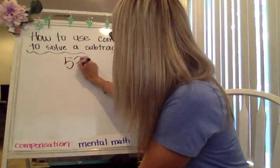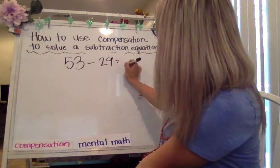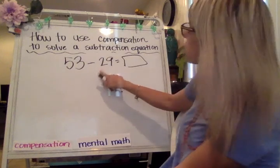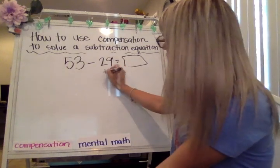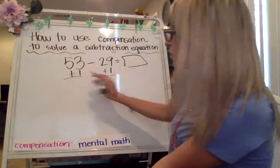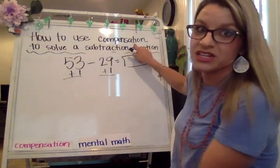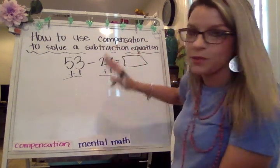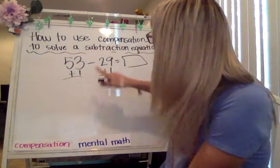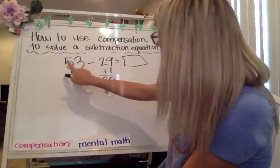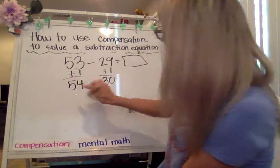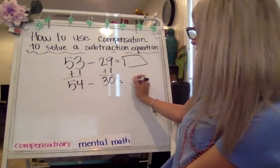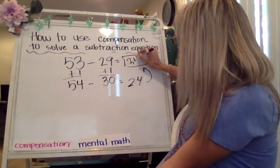How about 53 minus 29. We're going to look at the second number being subtracted — 29. Nine partners up with one to get to the next 10, so we're adding one on both sides. Note that subtraction with compensation is a little different than addition with compensation. So 29 turns into 30, and 53 plus one more is 54. 54 minus 30: five 10s minus three 10s is two in the tens. So the difference is 24.